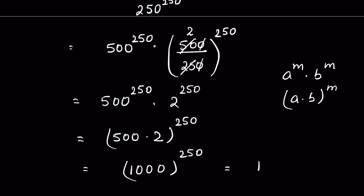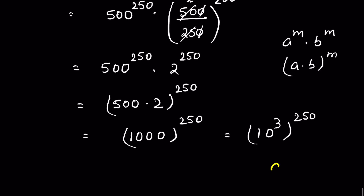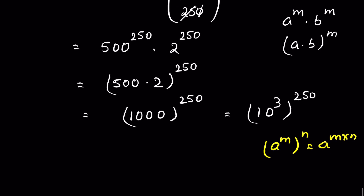Now 1000 we can write as 10 to the power 3, whole to the power 250. Again, there is an identity: a raised to the power m, whole raised to the power n, is equal to a raised to the power m times n. Therefore, it will be 10 raised to the power 3 times 250, which is equal to 10 raised to the power 750. So this is our answer.